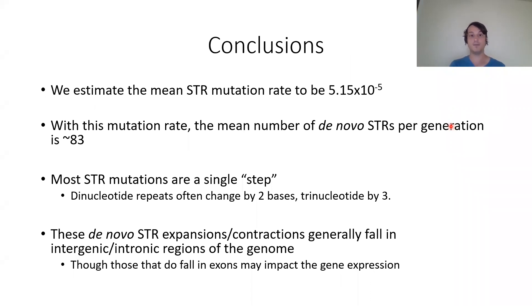In conclusion, we estimate the mean STR mutation rate to be about 5.15 × 10⁻⁵, three to four orders of magnitude higher than the SNV mutation rate. With this rate, the mean number of de novo STRs per generation is about 83 — a conservative estimate given filtering, sequencing difficulty, and exclusion of longer repeats. From Scott's STRDIFF work, most STR mutations are a single step: dinucleotides shift by two bases, trinucleotides by three. Most de novos fall in intronic or intergenic regions.